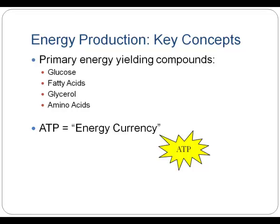In this presentation, we will look at how our bodies convert fuel sources into energy. There are a couple of key concepts to keep in mind. First, our primary energy-yielding compounds include glucose, which is derived primarily from carbohydrates; fatty acids and glycerol, which come from triglycerides; and amino acids, which come from protein. The second key concept is that ATP, or adenosine triphosphate, is our body's energy currency — it has high-energy phosphate bonds that can be broken to release energy so our bodies can do work.